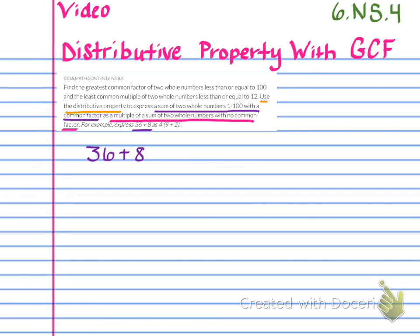Now we're going to use that so we can write what's in pink. It says we're going to change that to a multiple of a sum of two whole numbers with no common factor. That 'no common factor' is really important. So 9 plus 2 right here has no common factor, and then we bring out the greatest common factor — the 4 — giving us 4 times (9 plus 2). Go ahead and copy those pieces down now using different colors, writing everything that's underlined. You just want to write the part of the standard that says 'use the distributive property to express a sum of two whole numbers, 1 to 100, with a common factor as a multiple of a sum of two whole numbers with no common factor — for example' — that whole chunk.